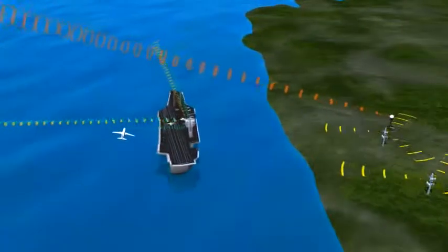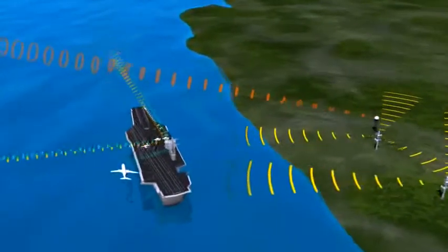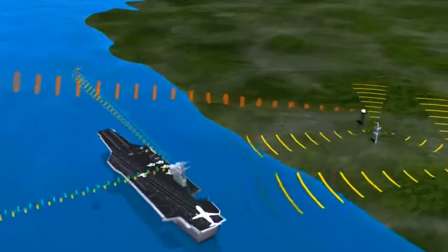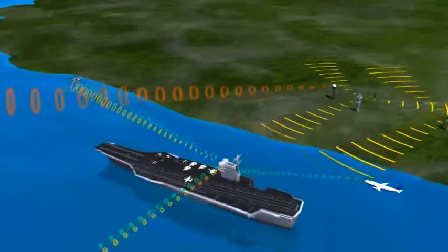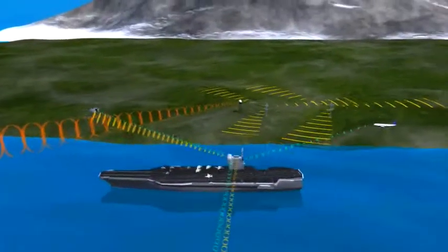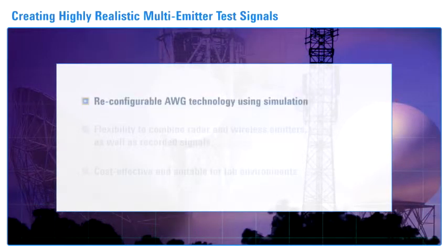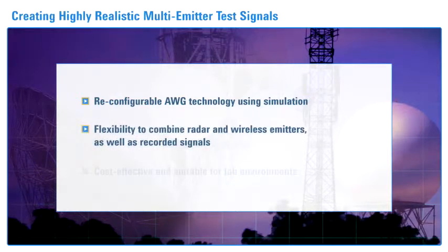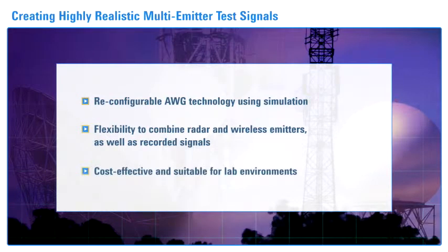Design simulation software, combined with high-performance test equipment, is used to create highly realistic test signals. It provides the flexibility and signal fidelity to address the increasingly cluttered spectral environment for tomorrow's radar and electronic warfare systems. It enables creating highly realistic test signals using reconfigurable AWG technology, which can be repurposed for different emitter scenarios using design simulation. It provides flexibility and convenience to combine pre-configured simulation sources for radar and wireless and recorded signals from digitizers and signal analyzers. In addition, it is cost-effective and suitable for lab environments.